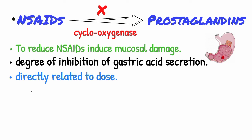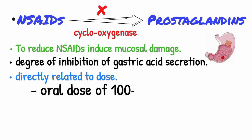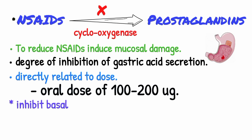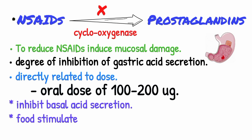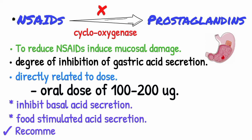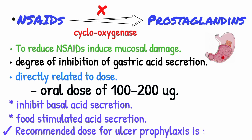An oral dose of 100 to 200 micrograms significantly inhibits basal acid secretion and food-stimulated acid secretion. The usual recommended dose of misoprostol for ulcer prophylaxis is 200 micrograms four times a day.